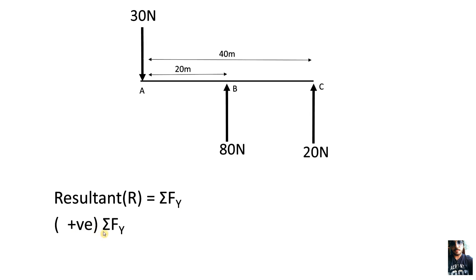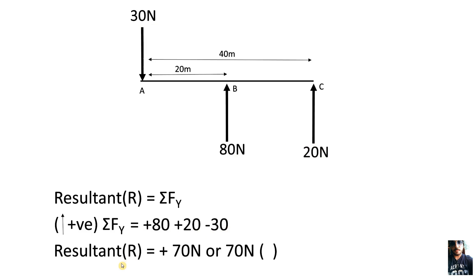Now while doing the summation of vertical forces, we will consider upward force as positive. So we have an 80N force positive, a 20N force positive, and a 30N force negative. On solving, the resultant force will be positive 70N. Now because the force is positive, the resultant force is 70N in the upward direction.